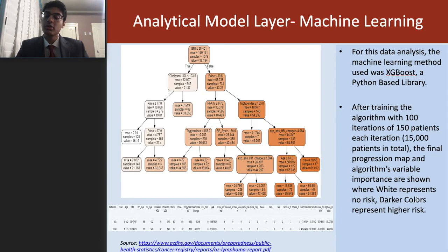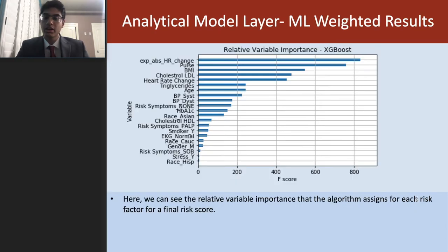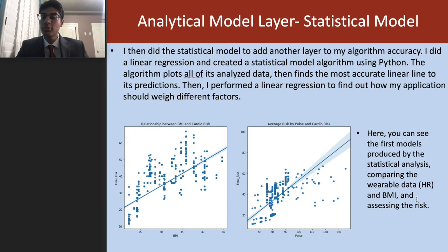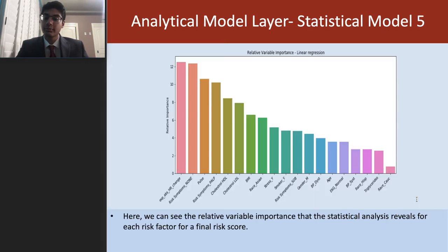I began by using NIH data and used XGBoost, a Python-based library for machine learning, and did a random forest algorithm. Then I weighted the factors determining their significance. I moved on to a statistical model to add another layer to my algorithm accuracy to determine the larger trend factors.